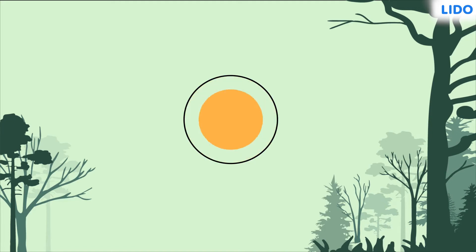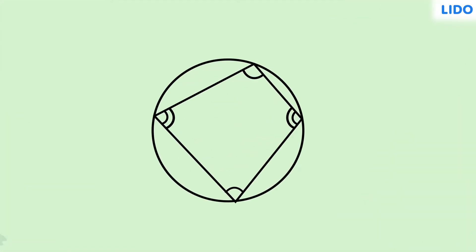Hey there! We know that a cyclic quadrilateral is a quadrilateral drawn inside a circle. Each vertex of the quadrilateral must touch the circumference of the circle.